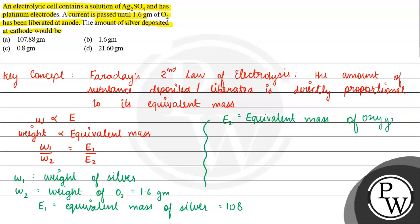So we put in values and find out the answer. So W1 upon W2, W2 is 1.6, is equal to E1 upon E2, so 108 divided by 8. W1 is equal to 108 upon 8 into 1.6. When we solve this, the value of W1 I get is 21.6 gram. So our answer becomes option number D, 21.60 gram.